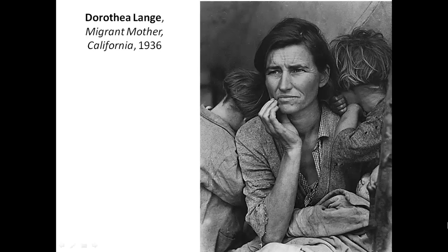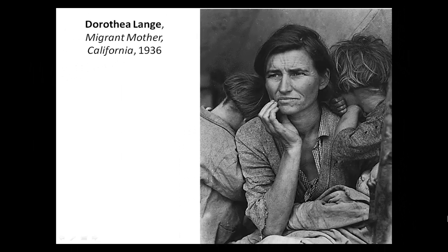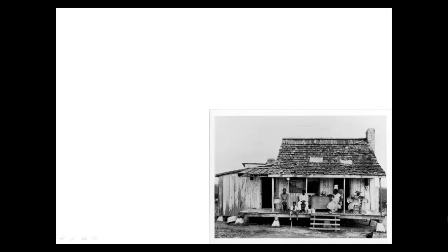Dorothea Lange very much has narrative in her work, but hers is based on documentary. She was in the States during the Great Depression and this particular image is of a migrant mother who worked in the fields to try and make enough money for her nine children. Her husband had passed away, so she was a single mom trying to feed her family. She had arrived at a pea farm only to be told that all the peas had frozen in the frost and died. You can just get the sense of despair and helplessness and worry. This woman is actually in her early 30s, but she has the wrinkles and the weather-beaten face of an older woman.